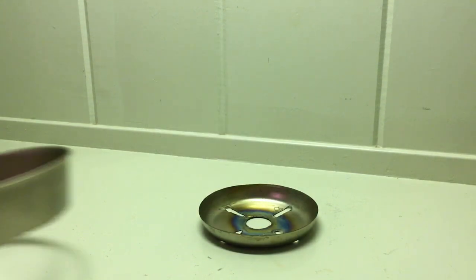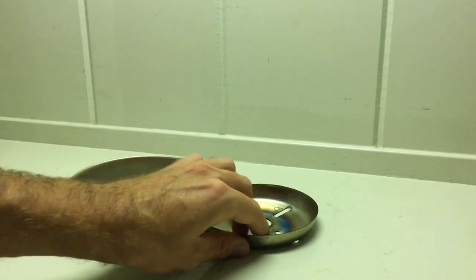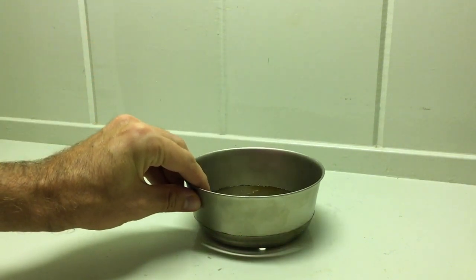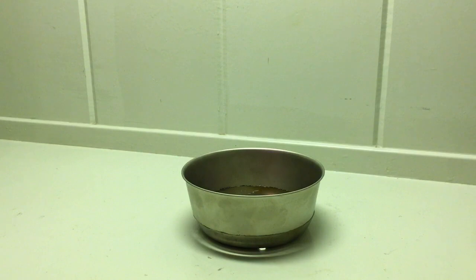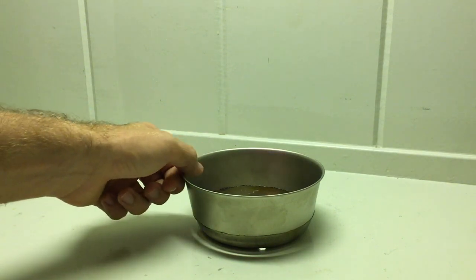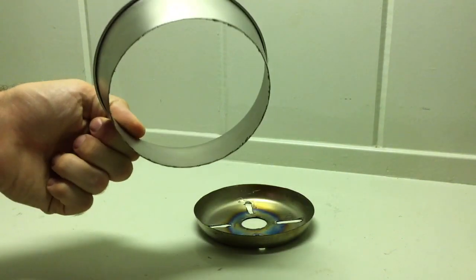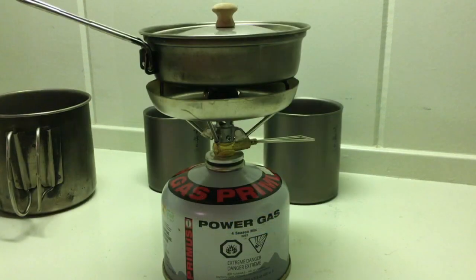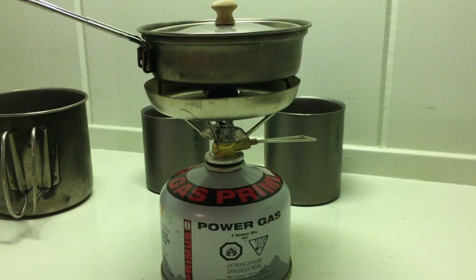So my windscreen is actually made out of a Snowpeak Trek titanium bowl that I cut using a dremel tool, and then cut out the hole in the center for the burner, and those four slits for the four pot supports.